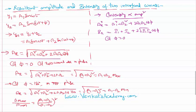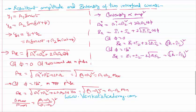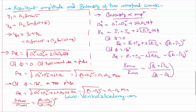If phi is 0, that is the waves are in the same phase, I resultant equals I1 plus I2 plus 2·root(I1·I2), which equals (root I1 plus root I2) whole square. Similarly, if the two waves are in opposite phase with phase difference 180 degrees, the resultant becomes (root I1 minus root I2) whole square. So the maximum intensity to minimum intensity ratio is (root I1 plus root I2) by (root I1 minus root I2) whole square.